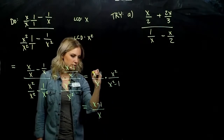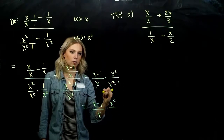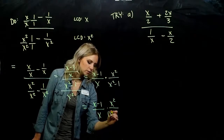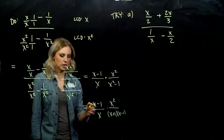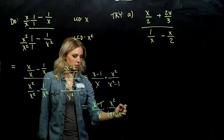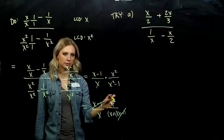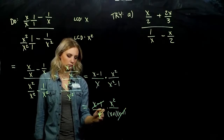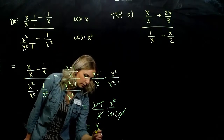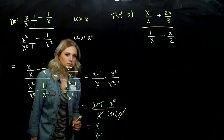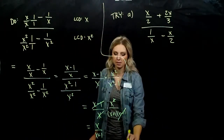Let's simplify. Up top we get X minus 1 all over X, and down below X squared minus 1 over X squared. Fraction divided by a fraction: keep the first, multiply by the reciprocal of the second. X squared minus 1 is a difference of squares — it factors into X plus 1 times X minus 1. We can cancel X minus 1 with X minus 1, and two factors of X up top with one below, leaving 1 up top over X plus 1. Same answer as before, just a different way to get there.